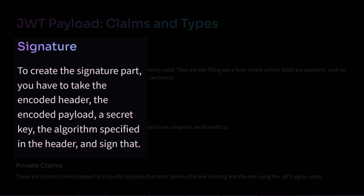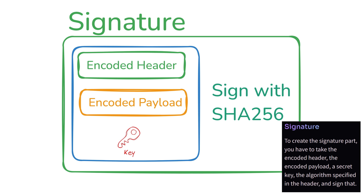The third part of JWT is the signature. To create the signature, you take the encoded header, the encoded payload, a secret key, and the algorithm specified in the header, and sign them together. In simple terms, it's like locking a box — the JWT — with a combination lock, where the signature represents the lock itself. The combination is created using the information inside the box, which is the header and payload, along with a security key. The signature is used to verify that the sender of the JWT is who they claim to be and to ensure the message wasn't changed along the way.